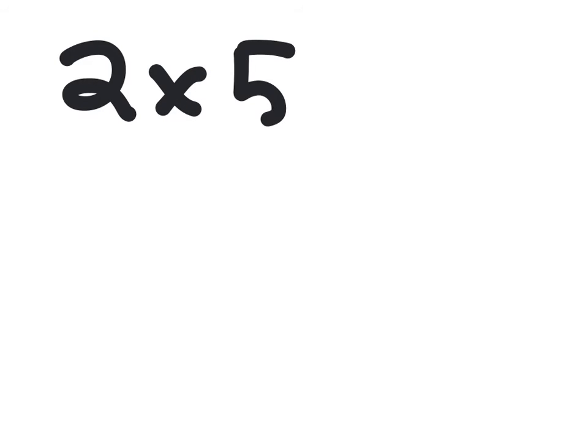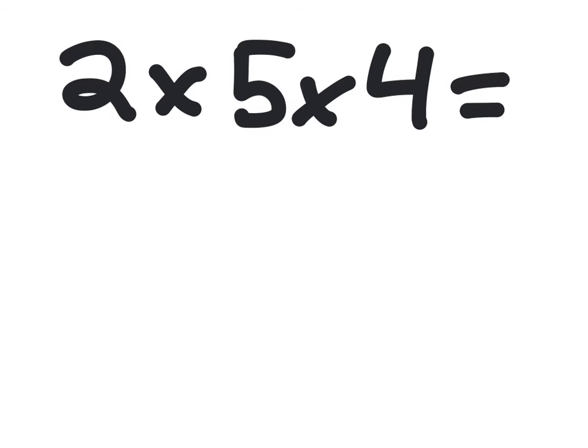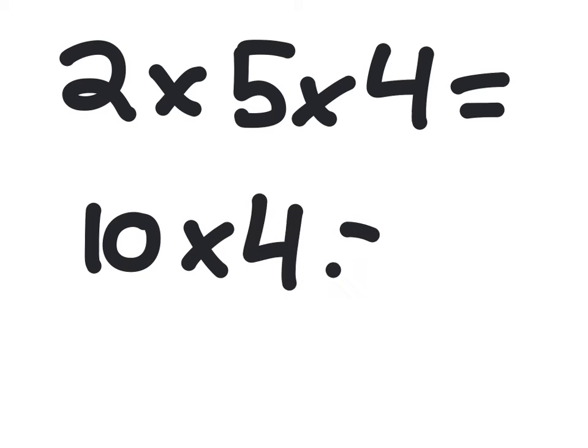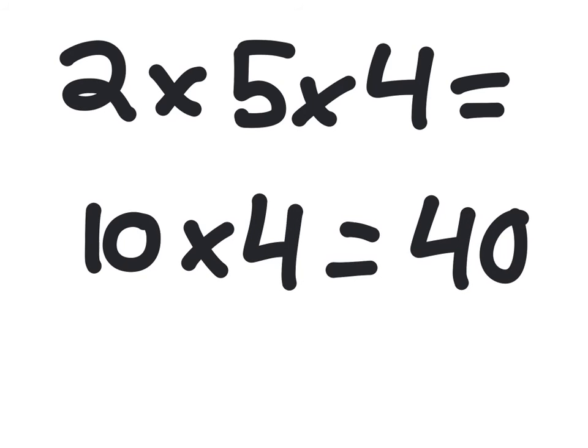So for the math, we are going to do 2 times 5 times 4. If we do 5 times 2 first, it would be 10. And then we are going to times that by 4, which equals 40. And that's your answer.